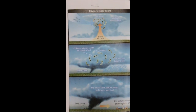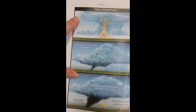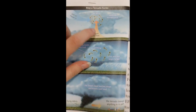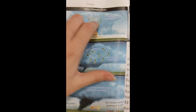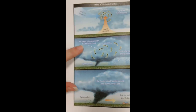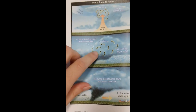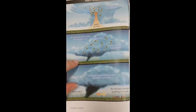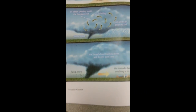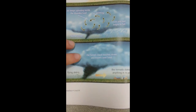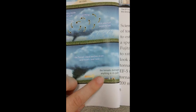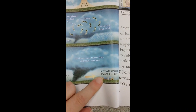How a tornado forms: Cold air moves in, warm air rises, and air spins inside the supercell thundercloud. Air keeps spinning, forming a funnel cloud as rain and hail begin to fall. The funnel cloud then touches down and travels over land, with flying debris as the tornado damages anything in its path.